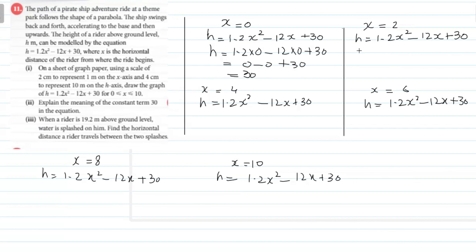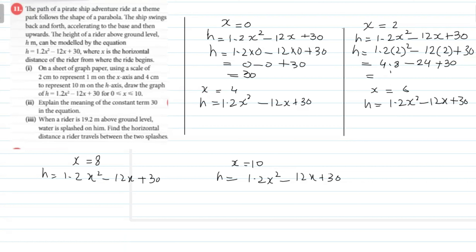x = 2 کے لیے: 1.2(2²) − 12(2) + 30 = 1.2(4) − 24 + 30 = 4.8 − 24 + 30 = 10.8۔ تو h کی value ہمارے پاس آئی 10.8۔